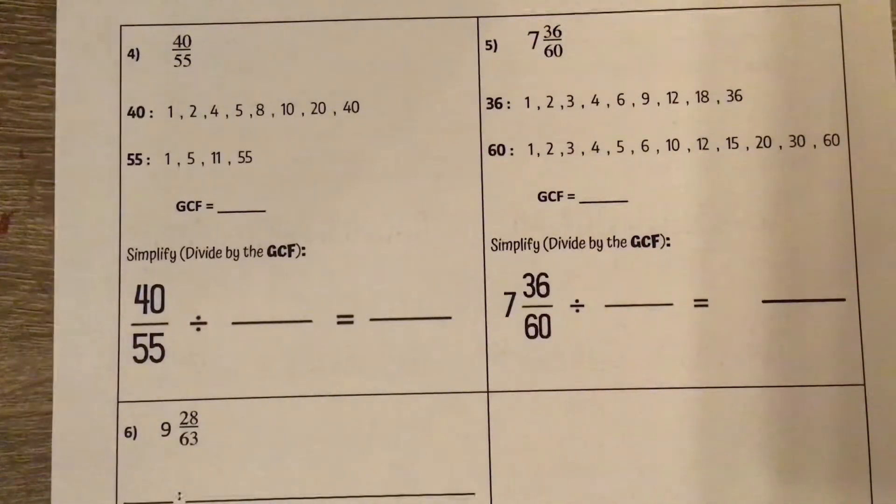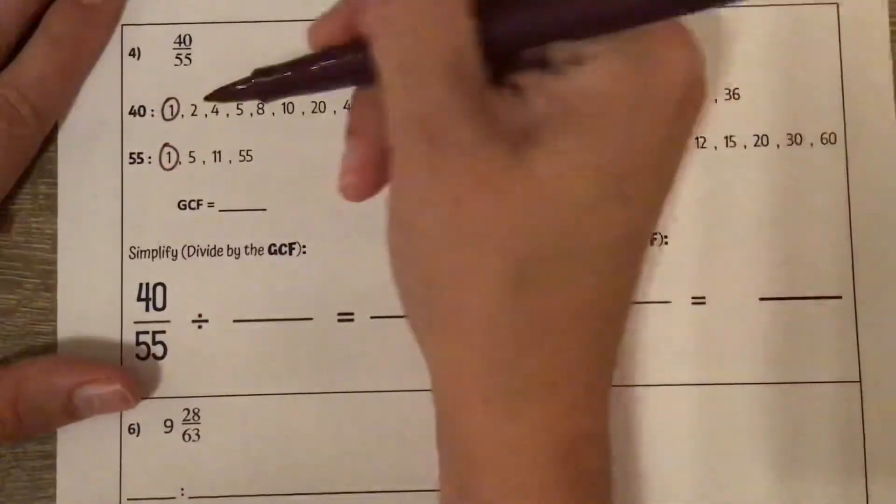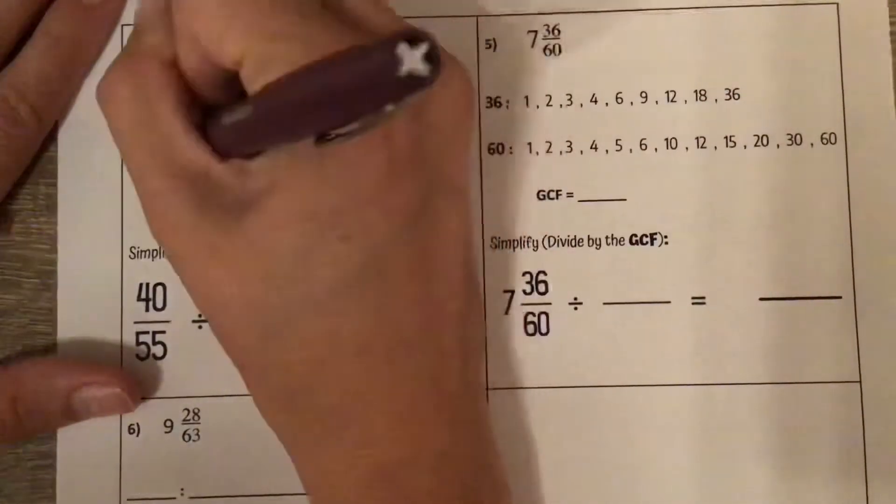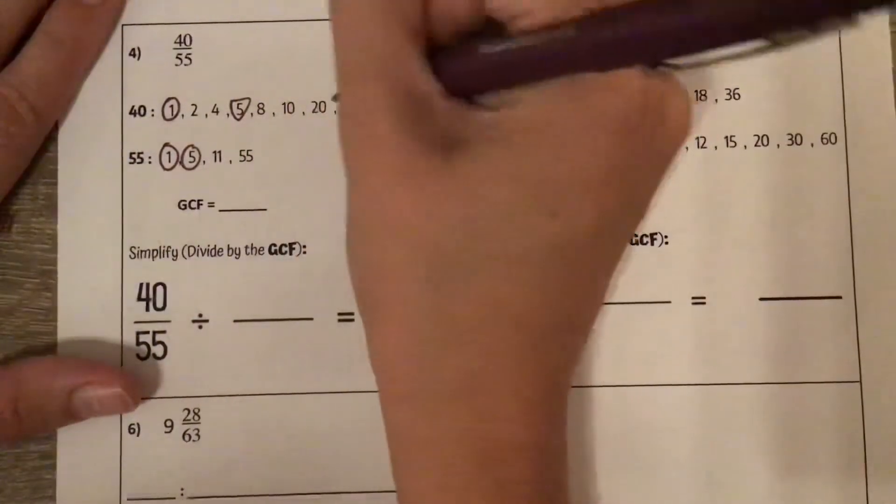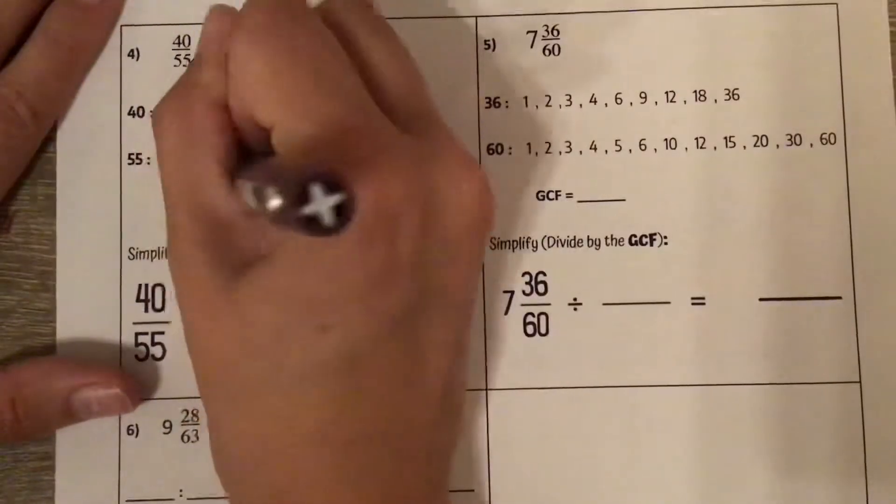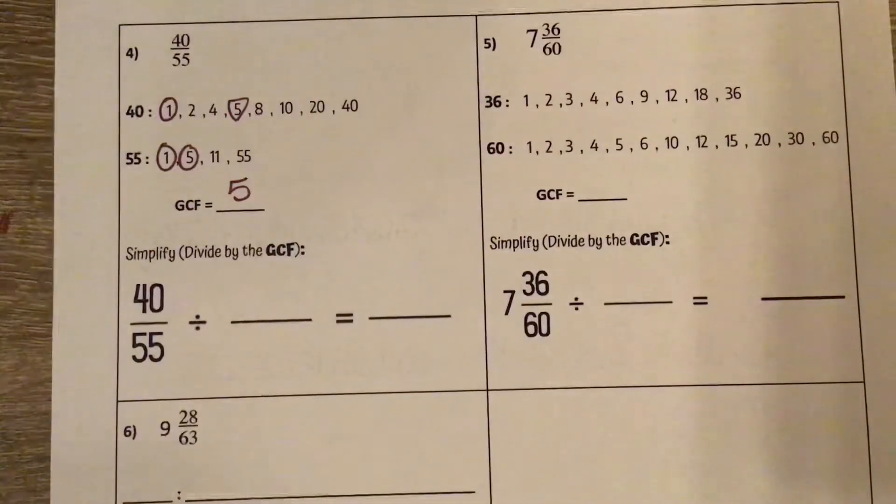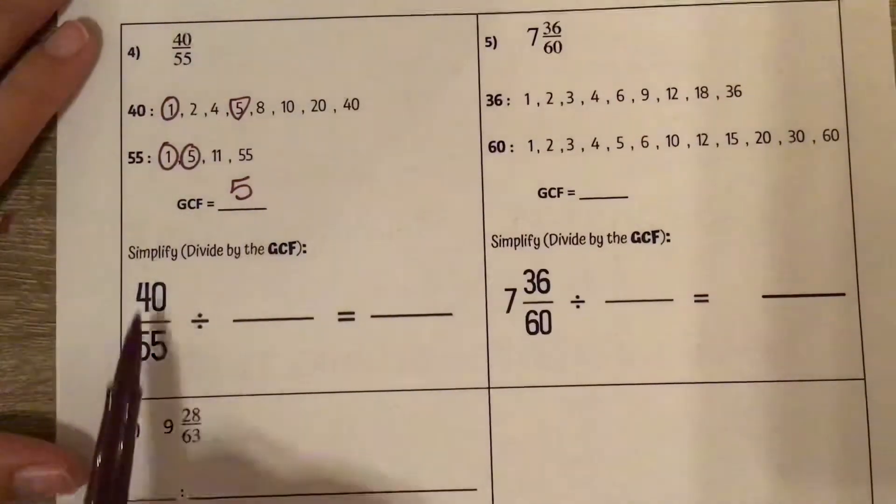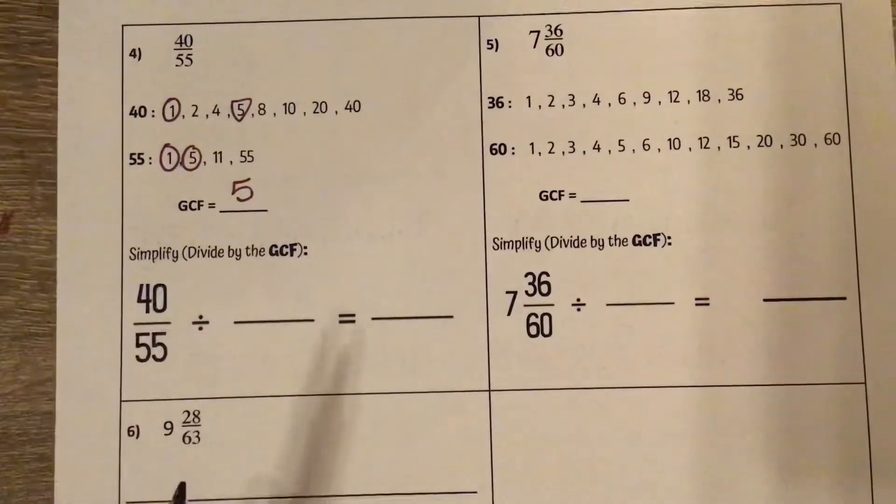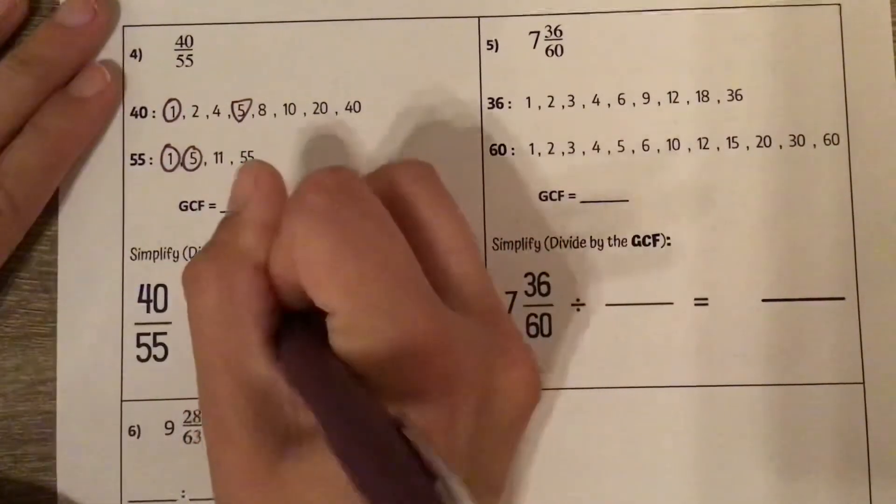First thing that we are going to do, we would have used our resource packet but it's given to us there, is we're going to circle the ones that they share in common. So they share 1, not 2, not 4, they share 5, not 8, not 10, not 20, not 40. So the GCF, the greatest common factor is 5. So we're going to take our fraction of 40 and 55 and divide by that GCF of 5.